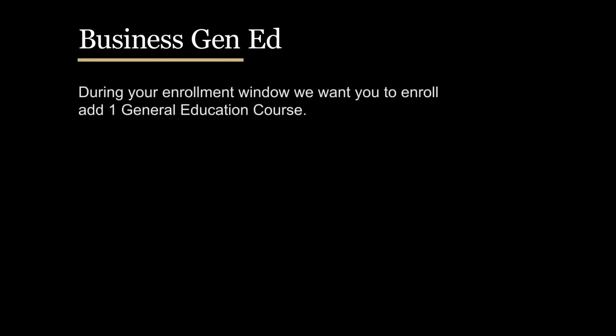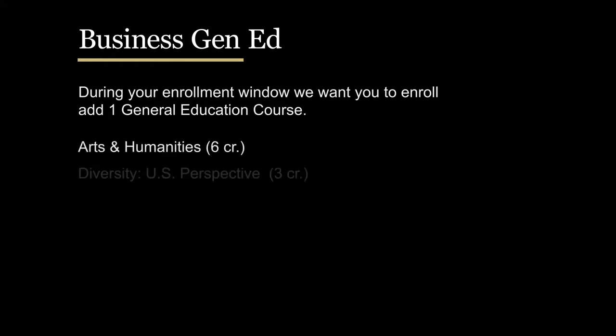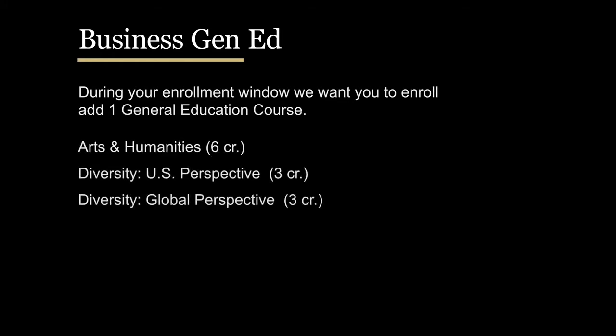During your enrollment window, we want you to add one general education course. General education courses are similar to high school requirements in that you must take a certain number of classes in each category. These categories are Arts and Humanities, Diversity U.S. Perspective, Diversity Global Perspective, Natural Science, and Written Communication.